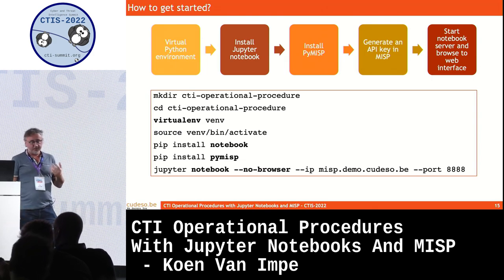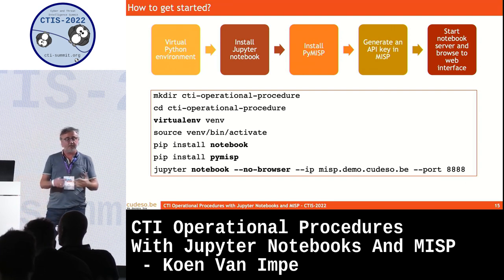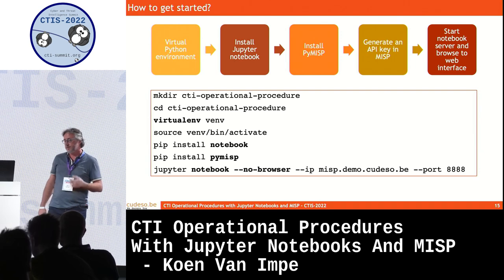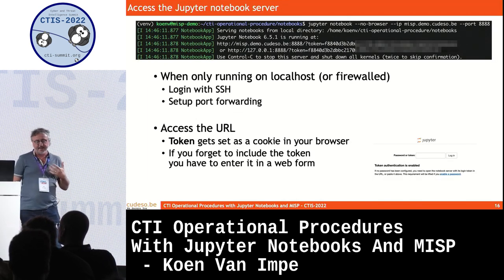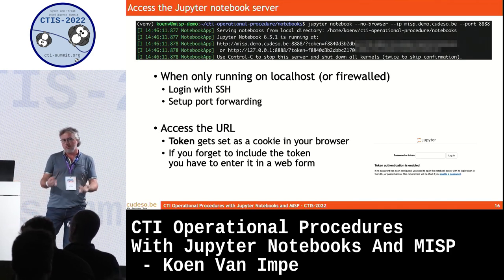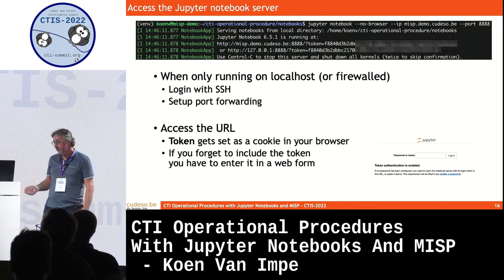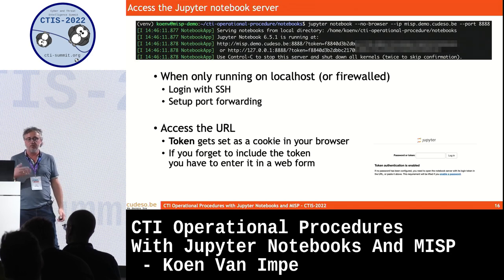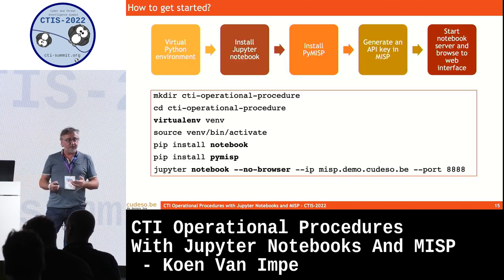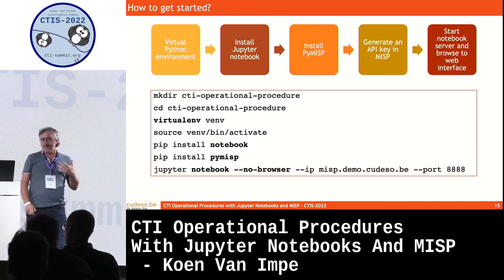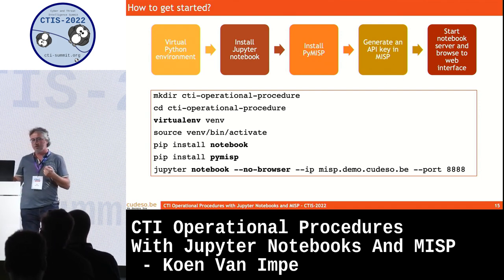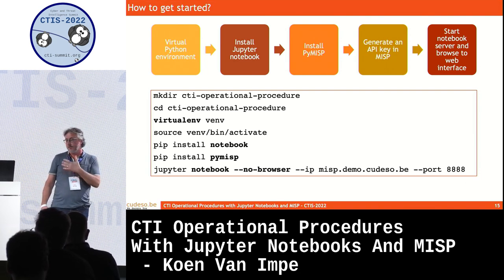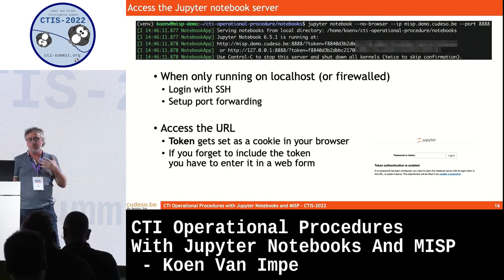How do you get started with Jupyter Notebooks and PyMISP for these operational procedures? Set up a Python virtual environment, install Jupyter Notebook, install PyMISP, create an API key for your MISP instance, and start up the notebook. Starting the notebook gives you a web interface. Typically a notebook starts on localhost, so it won't be accessible from the network. An easy way is SSH port forwarding. Alternatively, you can provide an IP address when starting the notebook and it will listen on that IP, making it accessible from anywhere through a normal web browser.